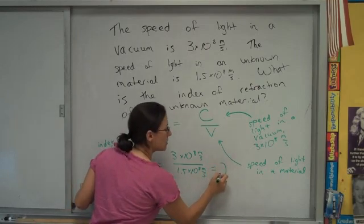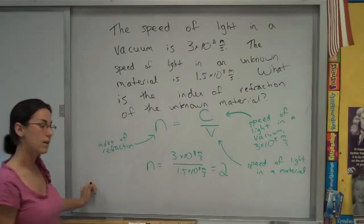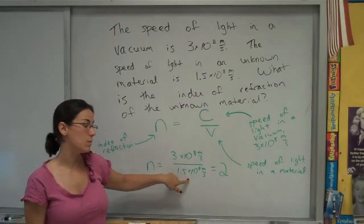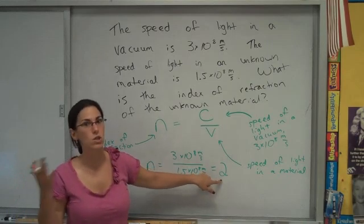And so since the speed of light in a vacuum is twice as big as the speed of light in a material, the N value for that specific material is 2.